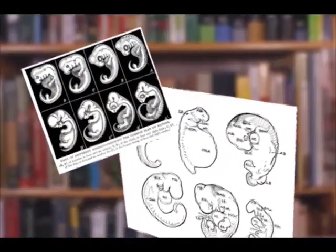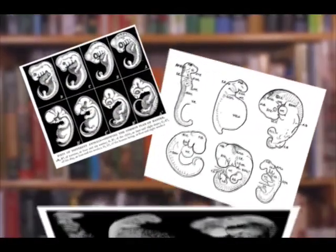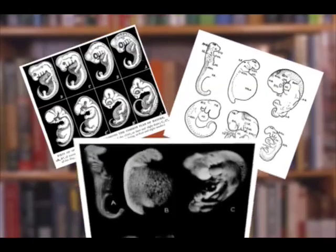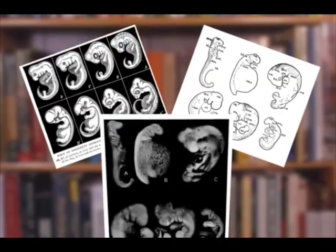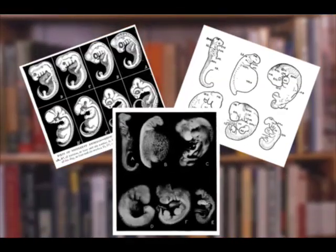It's clear that Haeckel may have fudged his drawings somewhat to look more like his ideal than they actually are. But does that actually take away from what we know about the relationship of embryology to evolution? Not a bit.